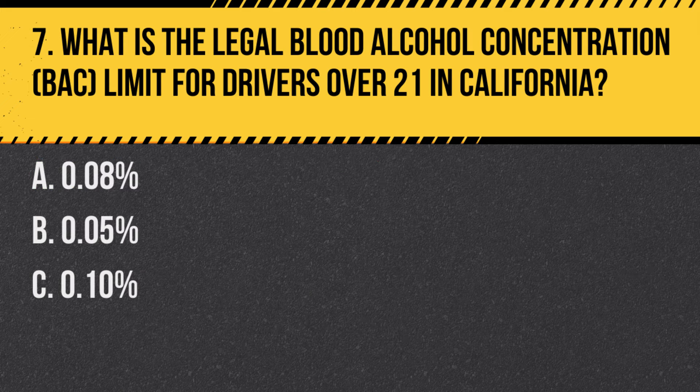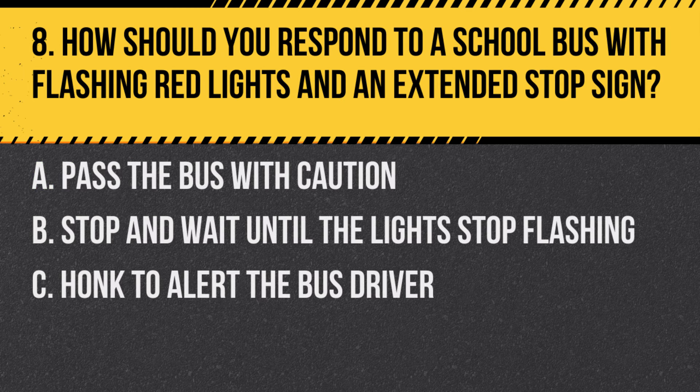Question 7: What is the legal blood alcohol concentration (BAC) limit for drivers over 21 in California? A. 0.08%. B. 0.05%. C. 0.10%. Answer: A. 0.08%. In California, the legal BAC limit for drivers over 21 is 0.08%.